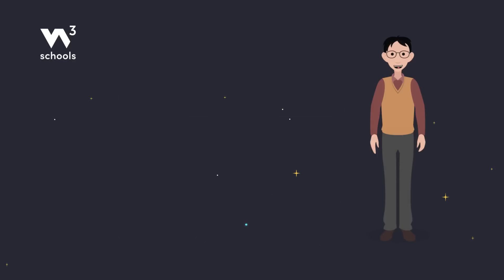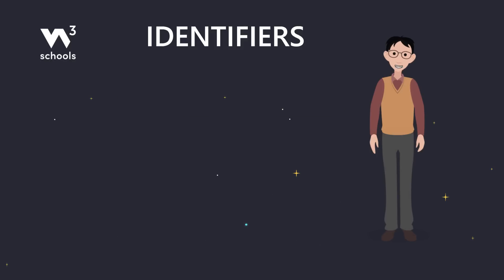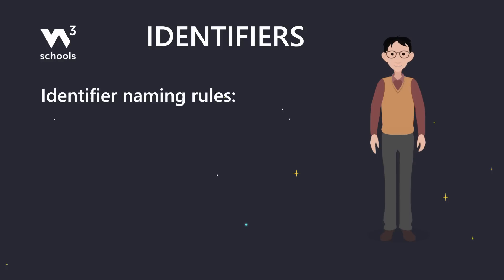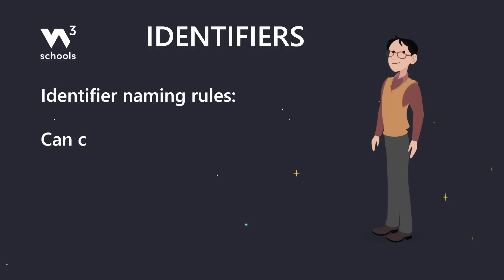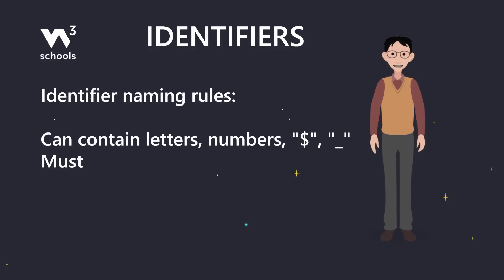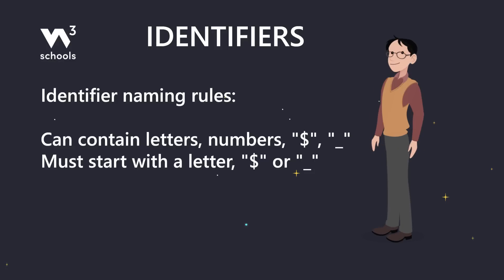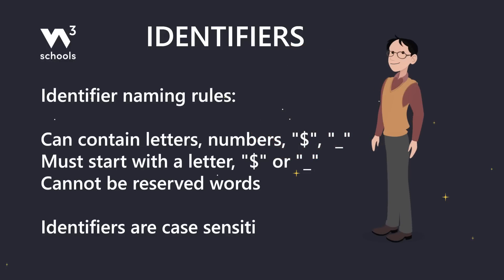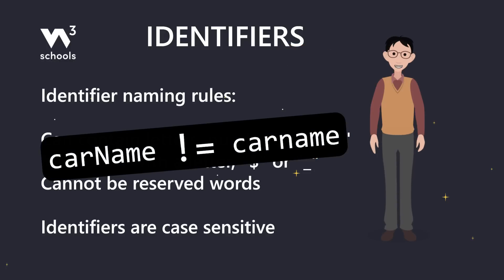Now let's talk about variable names, which are called identifiers in JavaScript — these are the labels for your treasure chests. Identifiers need to follow some naming rules: they can contain letters, numbers, dollar signs, and underscores; they must start with a letter, dollar sign, or underscore; and they can't be reserved words like let or const. Pro tip: identifiers are case sensitive — carName with a capital N is different from carname without any capital letters.